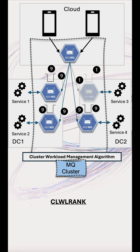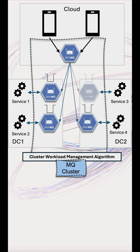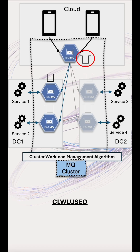If we want to only send messages to one site because we've got an active standby data centre, queues on one DC may be put-disabled, and they will be eliminated next. By default, the algorithm will use a local queue on the same queue manager if one is present. If instead the queue or QM has cluster workload use queue any, we look for non-local queues. If there are no local queues, then the algorithm splits evenly across the available channels.